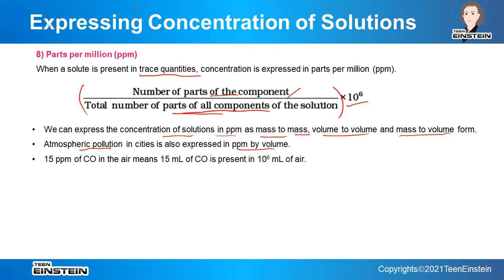When we say 15 PPM of carbon monoxide is present in air, the meaning is that 15 mL of CO is present in 10 to the power 6 mL of air. You can understand how low the value is — 15 out of 10⁶ is a very small concentration.